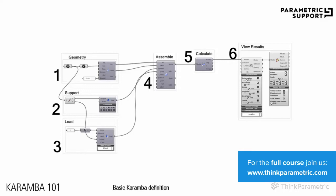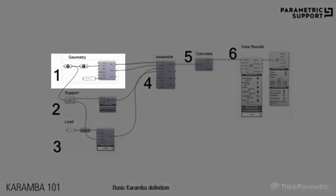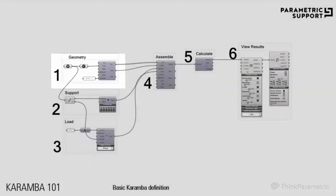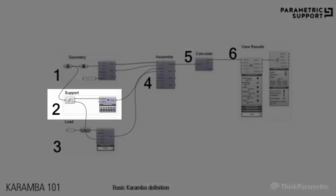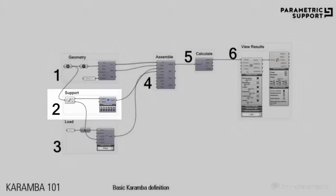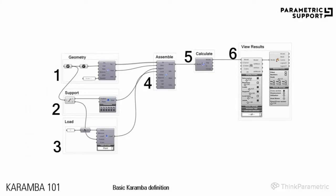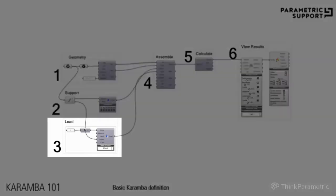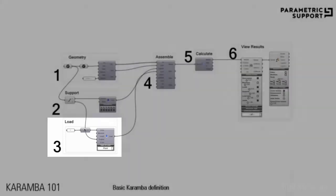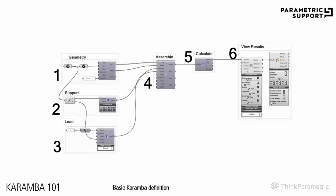Firstly, you need to provide the wire frame geometry and convert it to the element that Karamba understands as a structural element. Secondly, you need to define the supports. Then, when the elements and supports are defined, you have to indicate the points where the structure receives the loads. This is the third point. When these three points are fulfilled, you could already assemble the model.